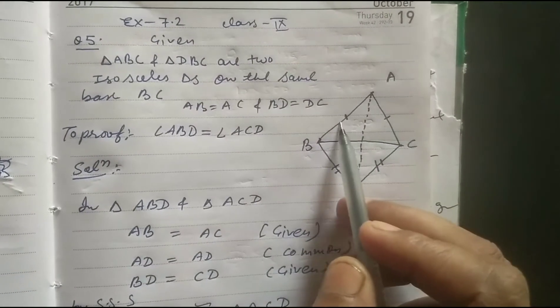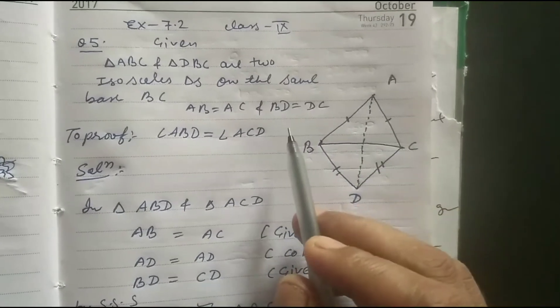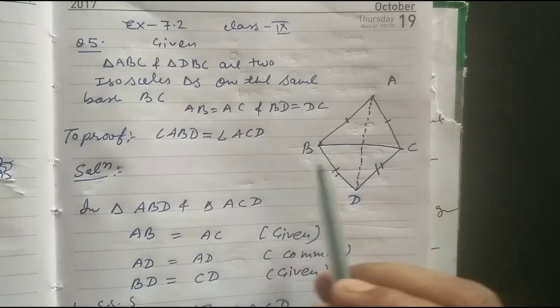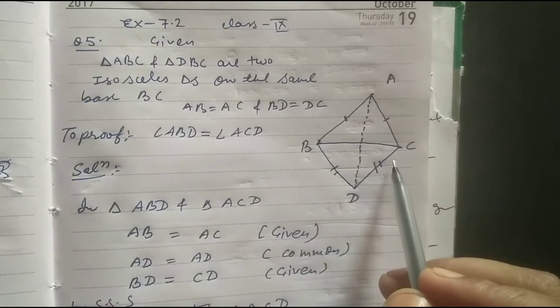That's why AB equal to AC, and BD equal to DC, which is given here. To prove angle ABD equal to angle ACD.